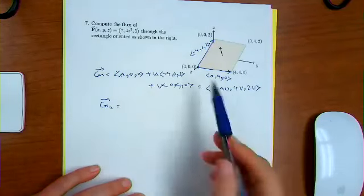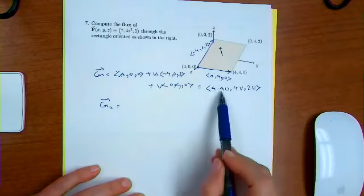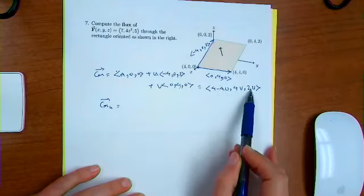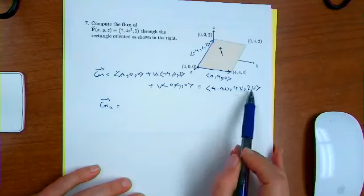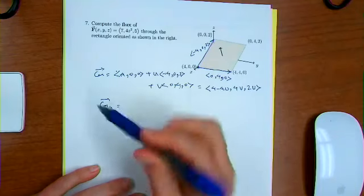And g sub u is exactly, I can go over here and take the derivative with respect to u and get minus four, zero, and two. But that's exactly that.